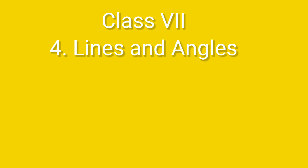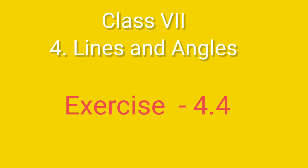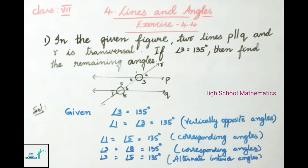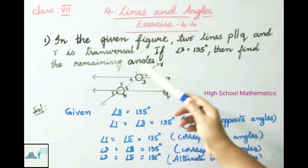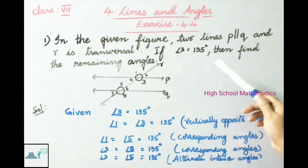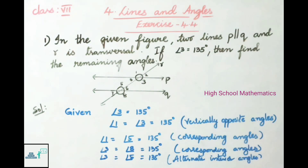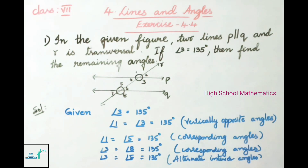Hello everyone, welcome to the high school mathematics channel. Today we are going to learn Class 7 Chapter 4 Lines and Angles, Exercise 4.4. In the given figure, two lines P is parallel to Q and R is a transversal. If angle 3 is equal to 135 degrees, then find the remaining angles.